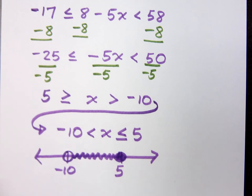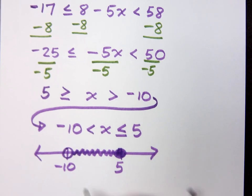So how do you write this using interval notation? Negative 10 to 5. Yep.